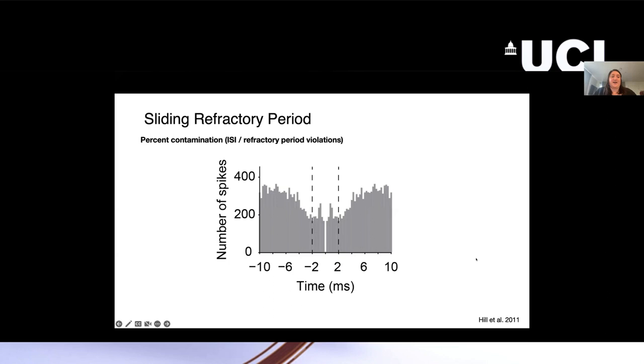The second metric that we use is a sliding refractory period metric. This is addressing the contamination side of things or false positives. It's an ISI or refractory period violation metric. The way that people have typically looked at this is they've plotted the autocorrelogram of a neuron. This is just time since the previous spike computed for each spike. If you're used to looking at autocorrelograms, this is a pretty contaminated one where you can see there's a lot of spikes that fall here between the sort of standard refractory period of two milliseconds. Typically what's done is you set that two millisecond refractory period, you count up the number of spikes that are here.